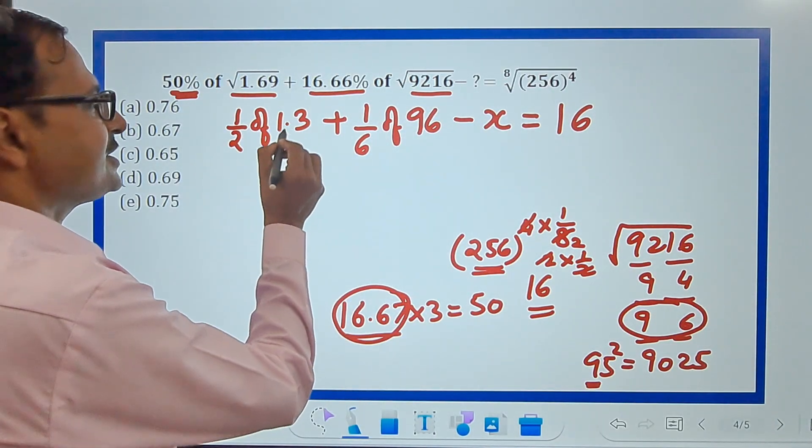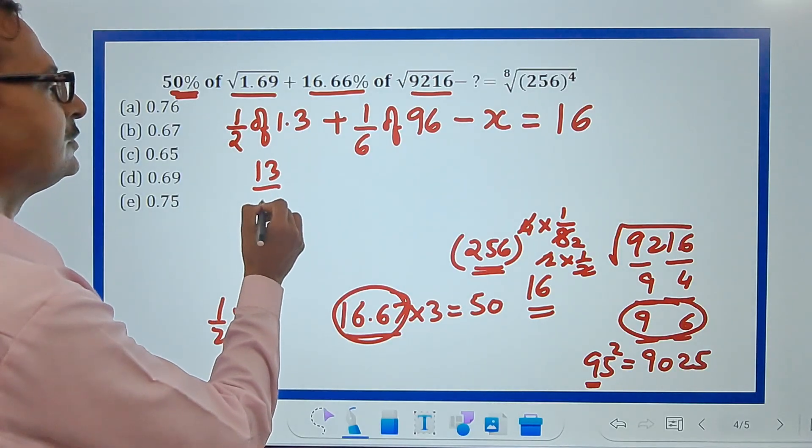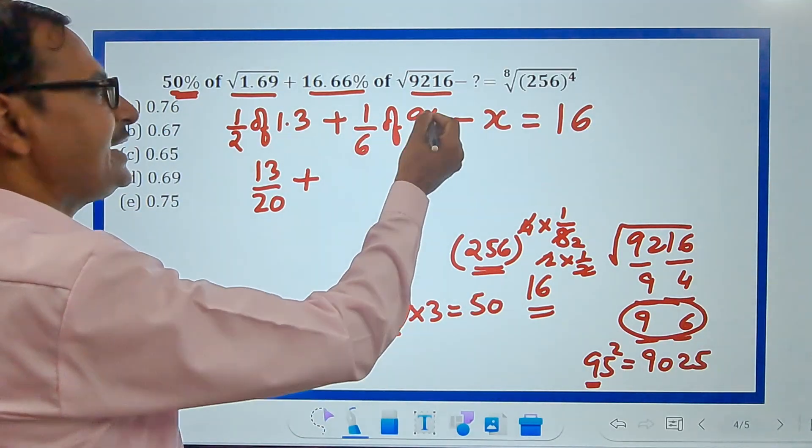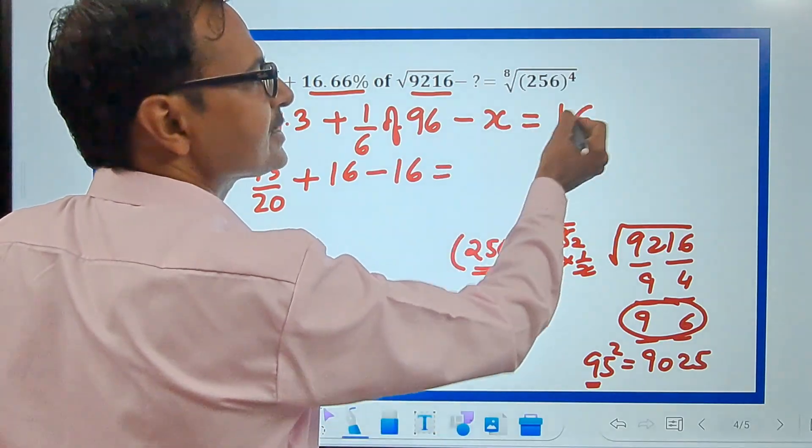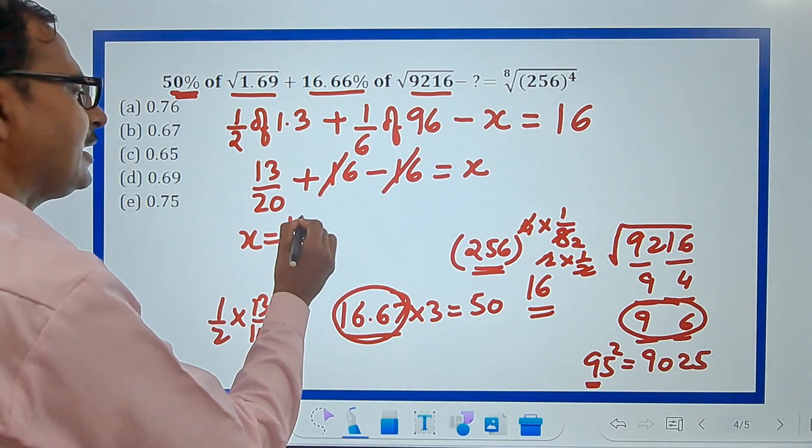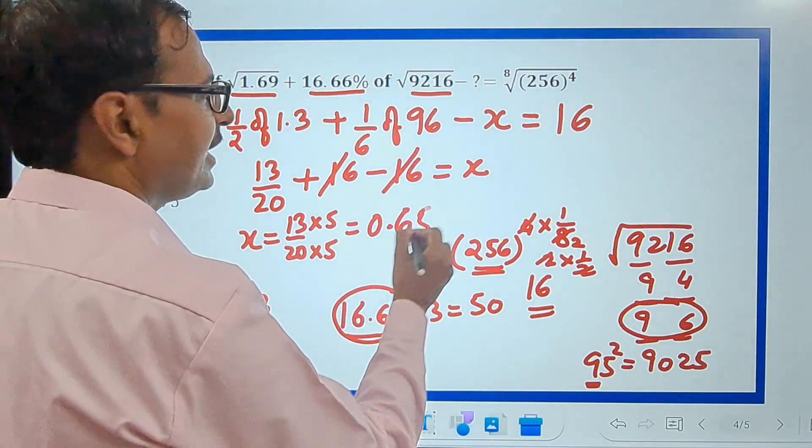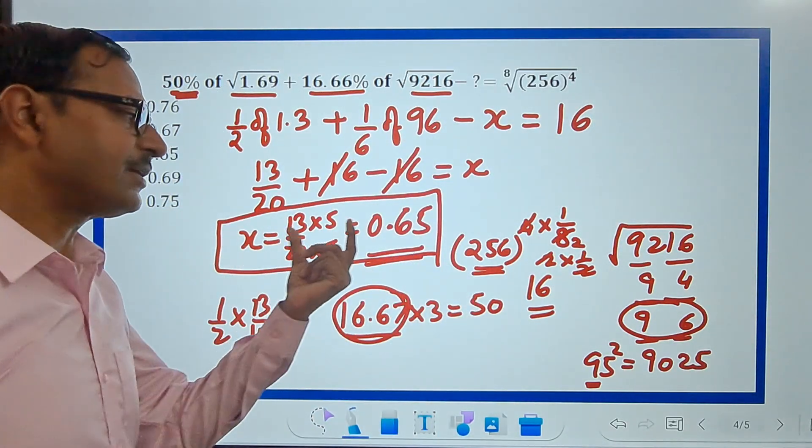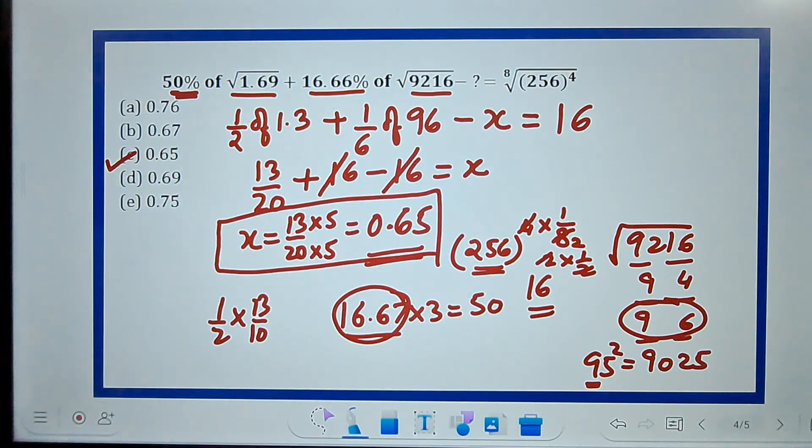Half of 1.3—this is practically half of 13/10, so you can write it as 13/20, plus 1/6 of 96. This gets cancelled exactly 16 times, so you have 16 here and minus 16. Your answer is x equals 13/20. Everywhere smartness works. 13/20—don't divide 13 by 20, convert that to base 100 so you have a number to be divided by 100, not by 20. So 0.65, or C is the answer for this particular question.